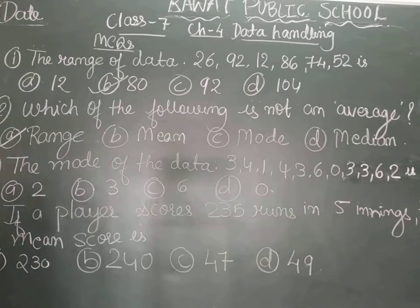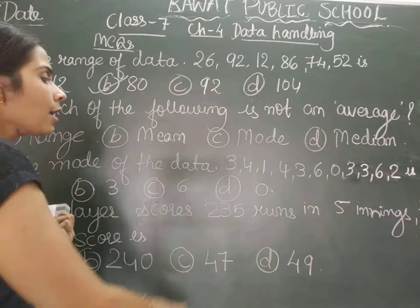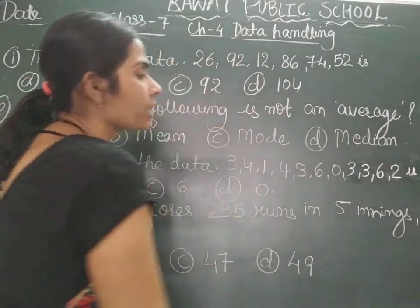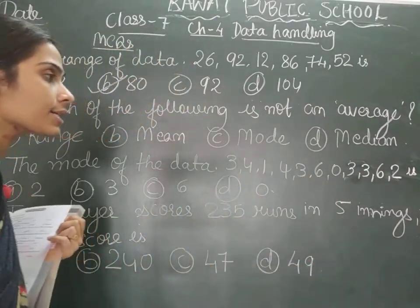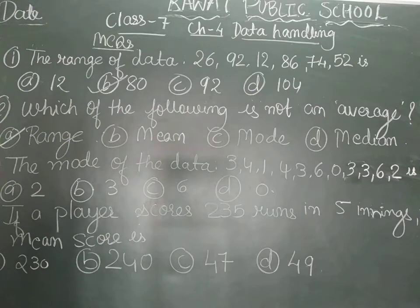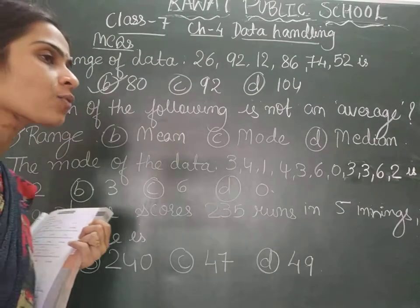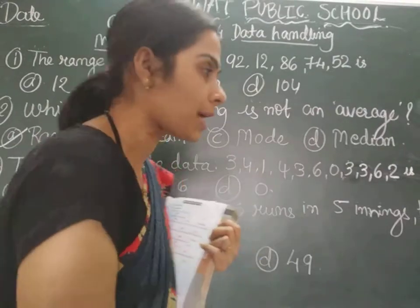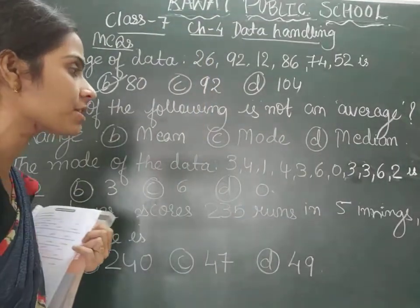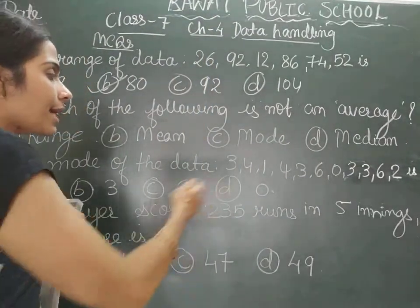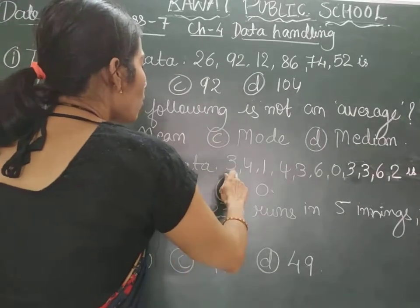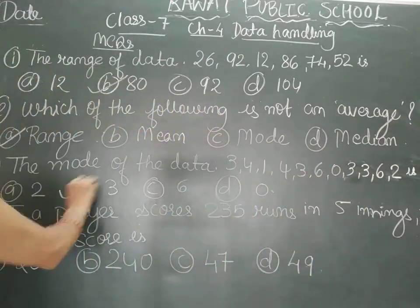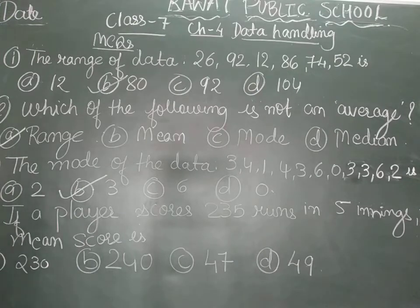The third question says: the mode of the data 3, 4, 1, 4, 3, 6, 0, 3, 3, 6, 2 is? As you all know, the mode of the data is the value which occurs the maximum number of times. Can you see any number which has occurred the maximum times? Yes, we can see 3 here — it appears 4 times. So, 3 is the mode in this question.